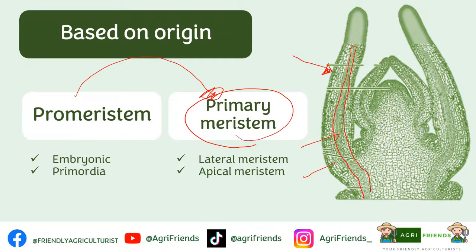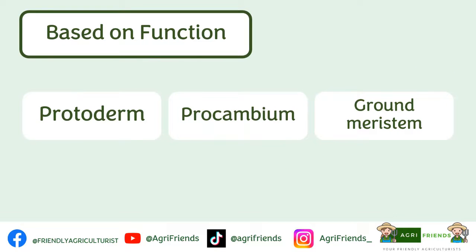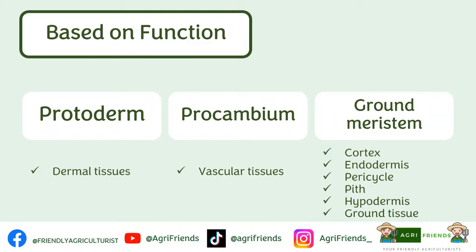The protoderm, procambium, and ground meristem are usually defined as types of meristems based on function, but technically they are produced by the primary meristem. The protoderm is the outermost plant tissue and it forms the epidermal tissue system or the dermal tissues — their function is to protect the plant from mechanical shock. Procambium is the innermost layer and will produce the vascular tissues. Ground meristem is located between the protoderm and procambium and will form the cortex, endodermis, pericycle, and pith in dicots, while hypodermis and ground tissues in monocots.